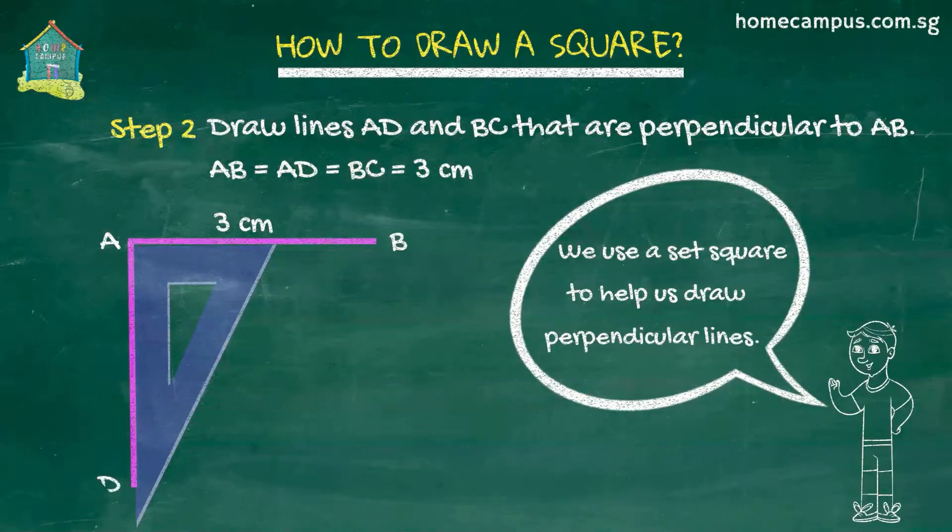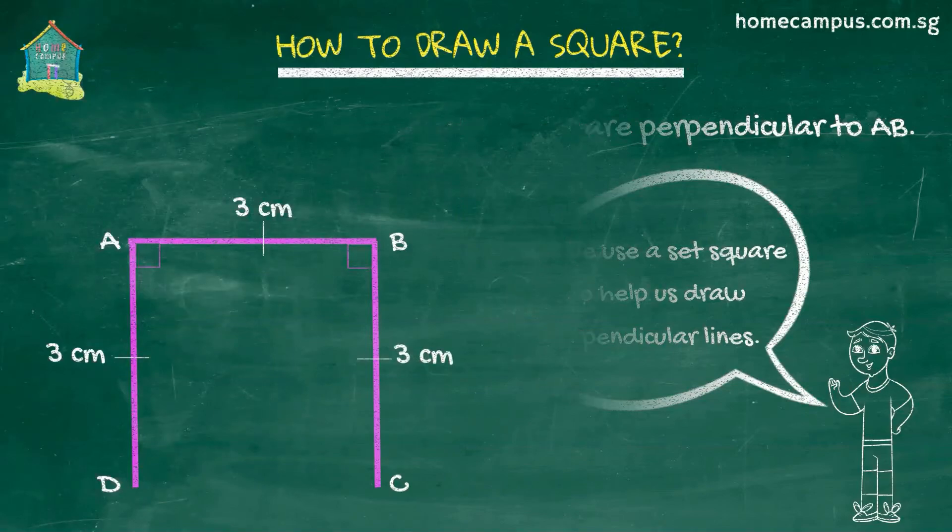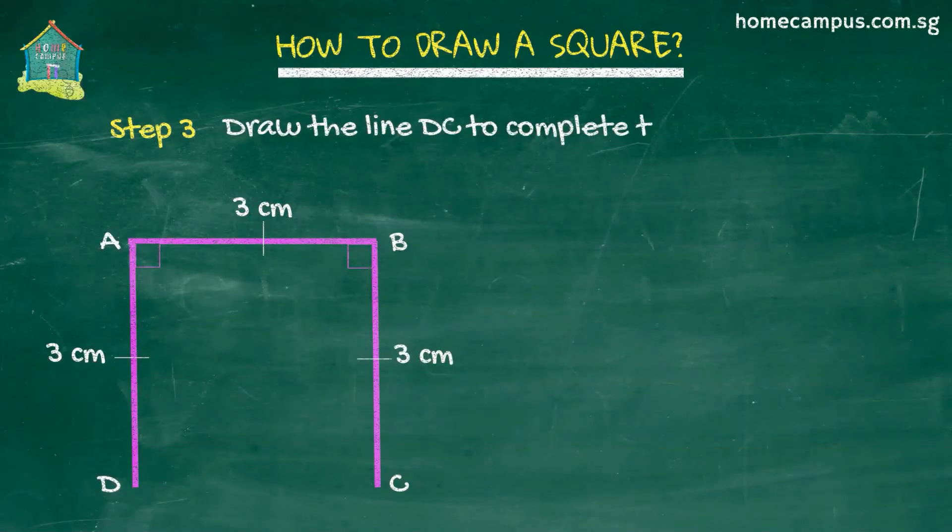After we draw the perpendicular lines we measure and mark those lines at 3 centimeters. Lastly we draw the line DC to complete the square.